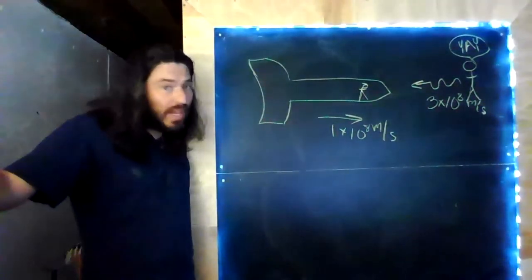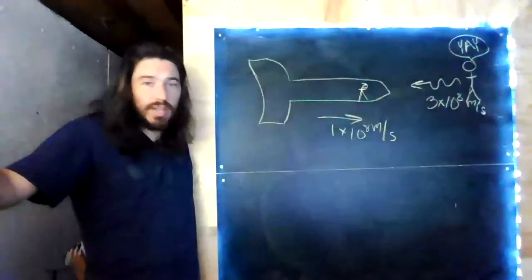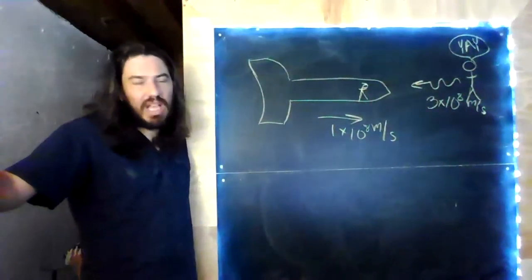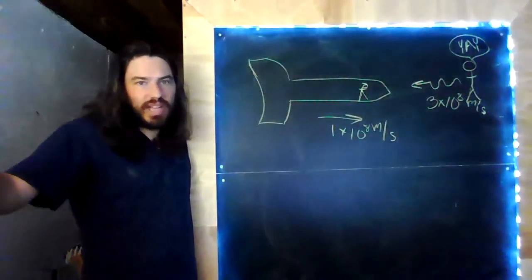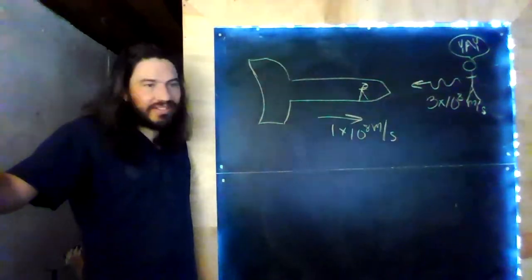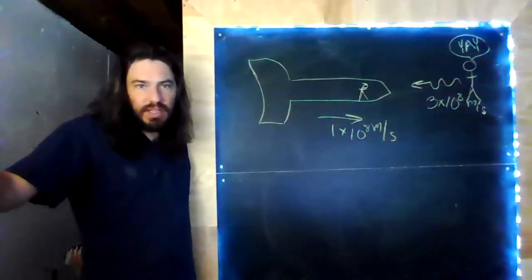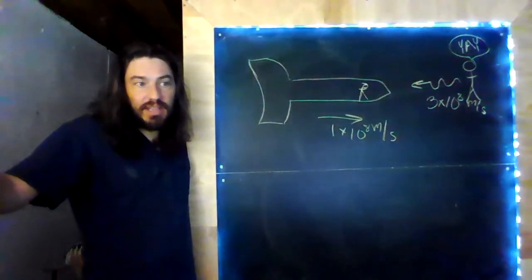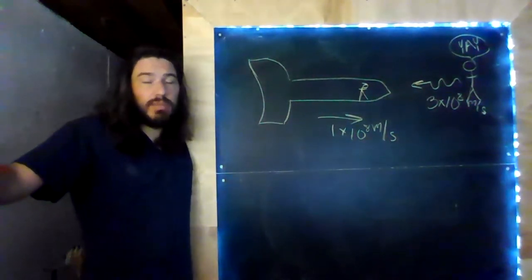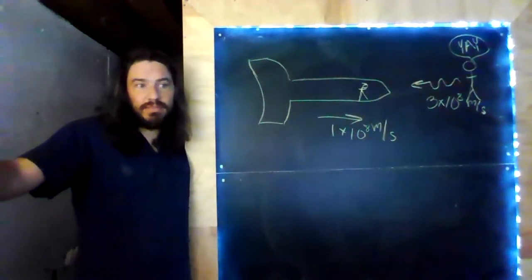If light waves acted like sound waves, we would get 4×10⁸, wouldn't we? We don't. They don't act like sound waves. Susie and her fans measure the exact same speed: 3×10⁸. This is the principle of relativity — everybody measures the same value for the speed of light.